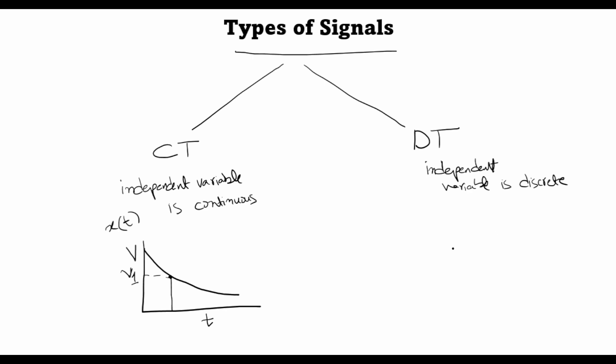On the other hand, discrete time signals are ones which are defined only at discrete instances. Let's say I can have a signal like this, like this, like this. So if I call the independent variable here n, this signal is defined at n equal to 1, n equal to 2, and n equal to 3, and at all other values of n, the signal vanishes. So this is an example of a discrete time signal.